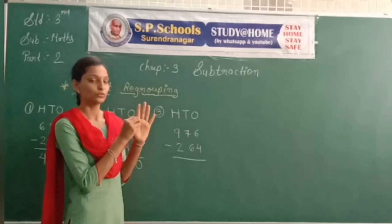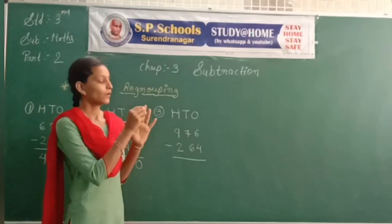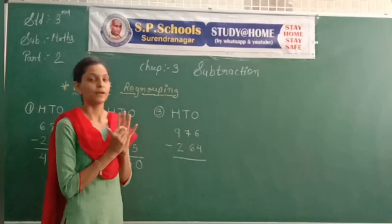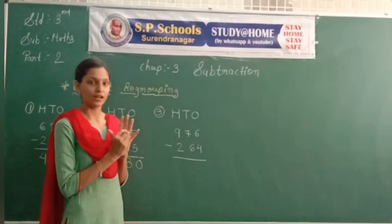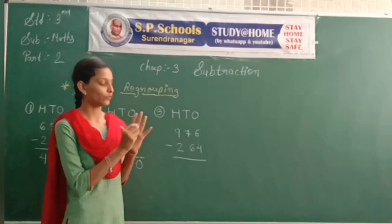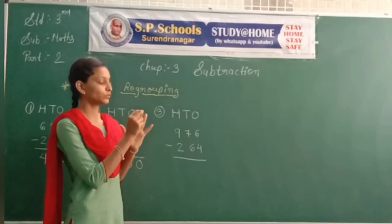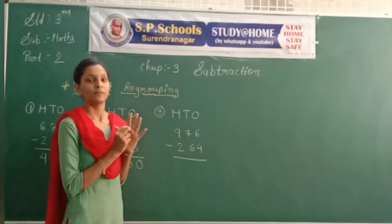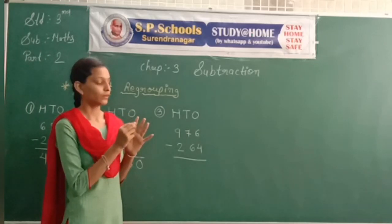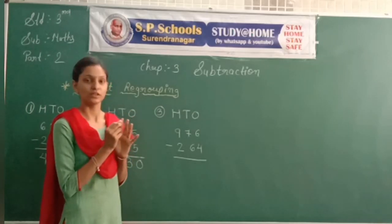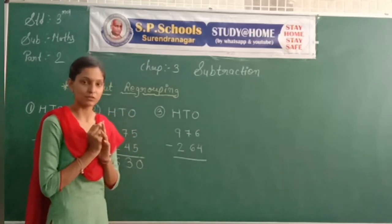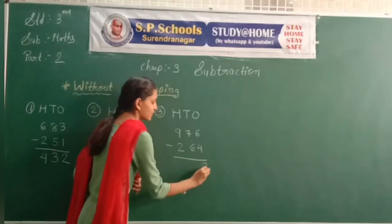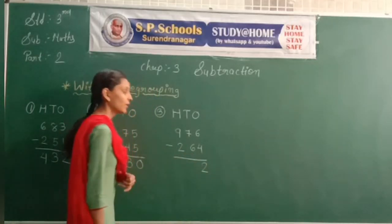Count off 1, 2, 3, 4. Remaining number: 1, 2. That is 2. So one's place answer is 2. Then next: 7 minus 6.